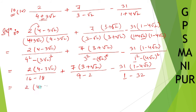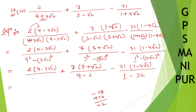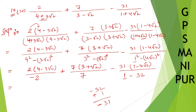So now, writing the simplified denominators: 16 minus 18 — minus 18 plus 16, so minus sign comes, giving 18 minus 16 equals 2, so this becomes minus 2. Similarly, 9 minus 2 is 7. For the third, 1 minus 32 — minus sign comes, giving 32 minus 1 equals 31, so it is minus 31. I can write down minus 31.